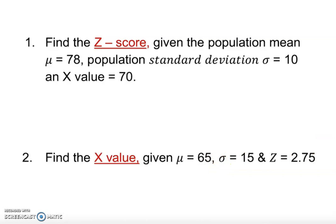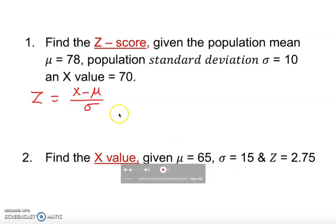Recall the z-score formula: z is equal to x minus the population mean, over the population standard deviation. The meaning of z-score is basically how many standard deviations the data value is away from the mean. That's the definition of a z-score.